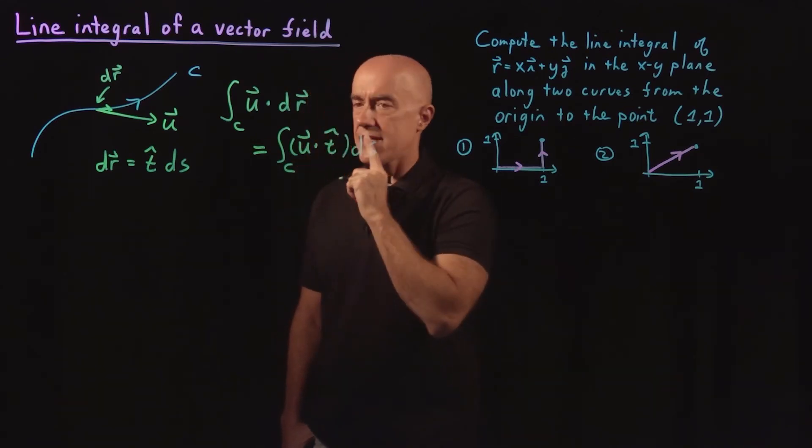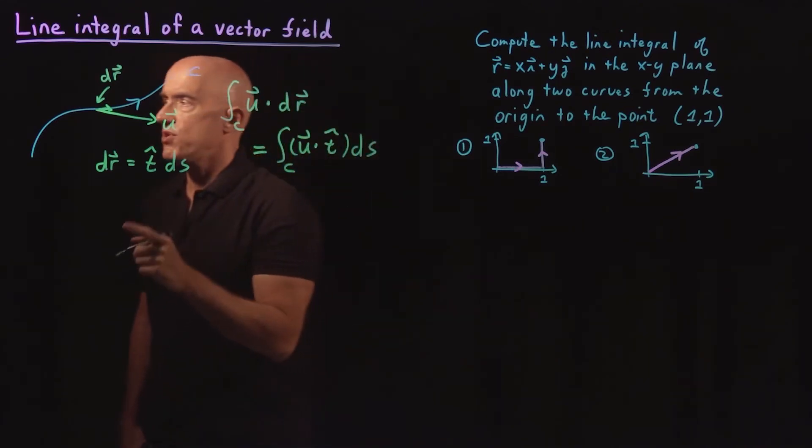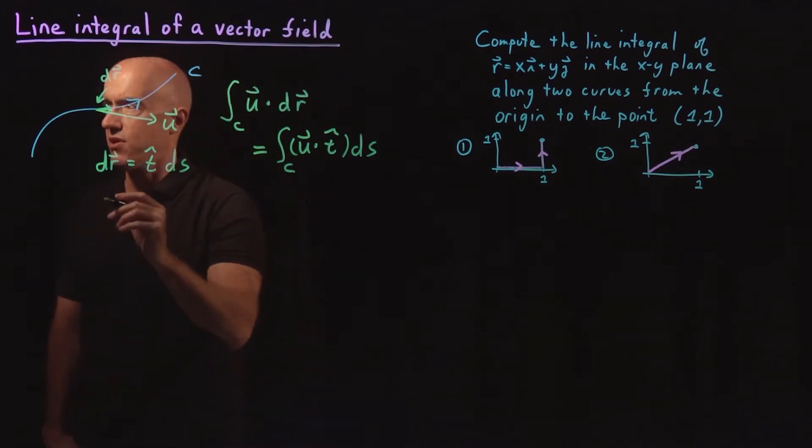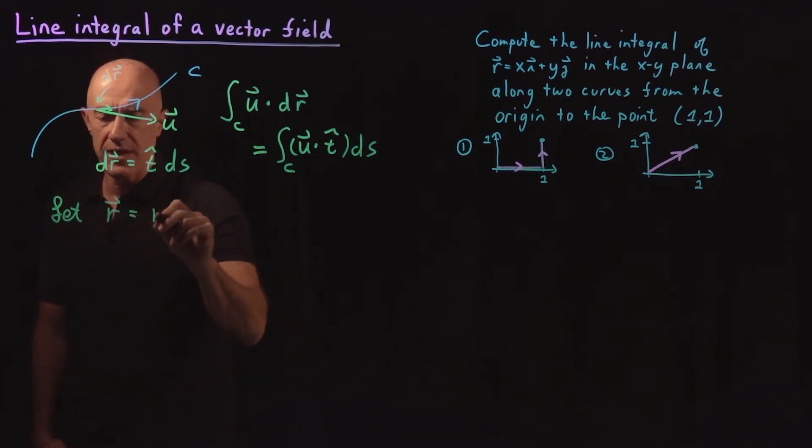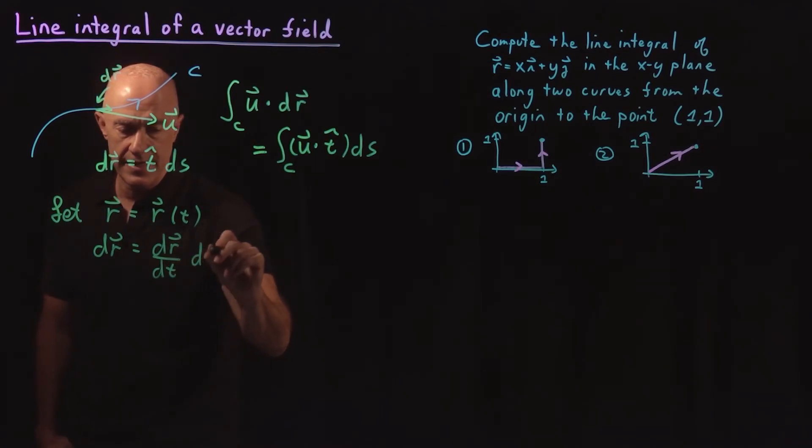How do we compute such an integral? Usually we do it by parametrizing the curve. So we let R vector be a function of time.